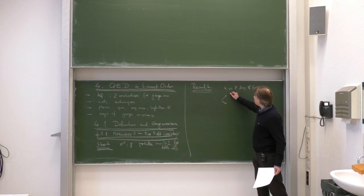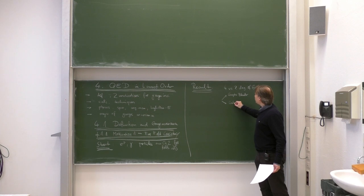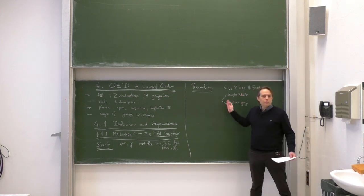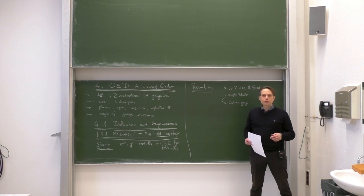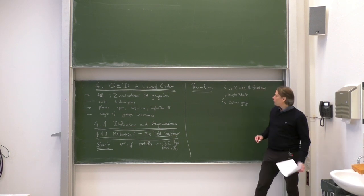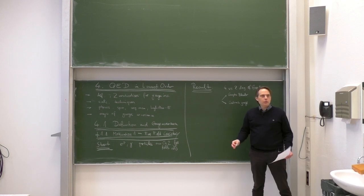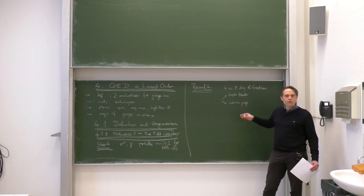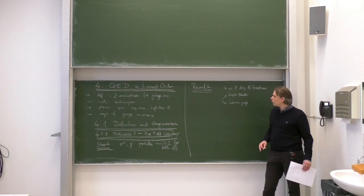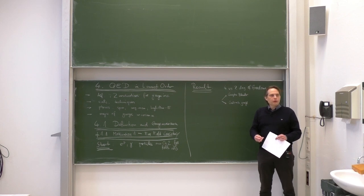We discussed two different solutions: on one hand the Gupta-Bleuler formalism, and on the other hand Coulomb gauge quantization. In the Gupta-Bleuler formalism, we treated the photon field in a Lorentz covariant way. We introduced the gauge-fixing term into the Lagrangian, which breaks gauge invariance. As a result, we can quantize and get 4 degrees of freedom from the photon field. But the Hilbert space is not positive definite — it has negative norm states. To get a consistent interpretation, we need to go to equivalence classes and physical subspaces.